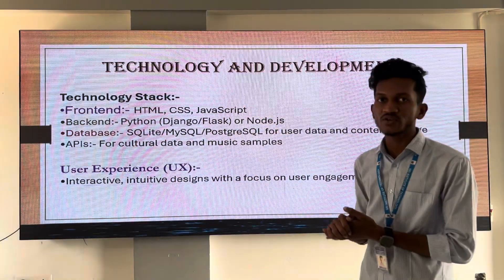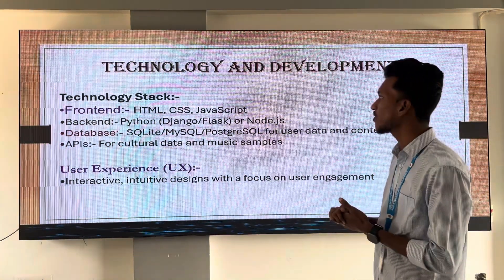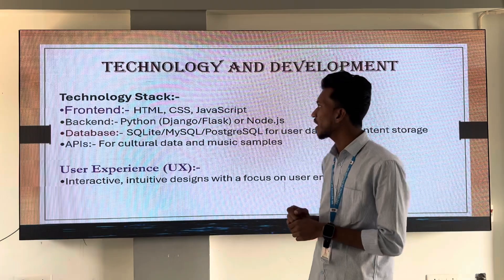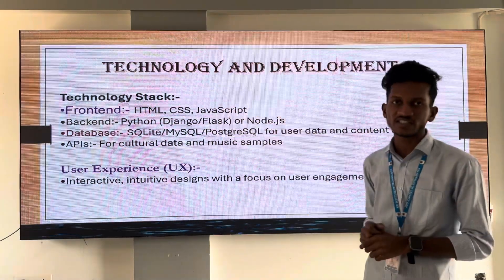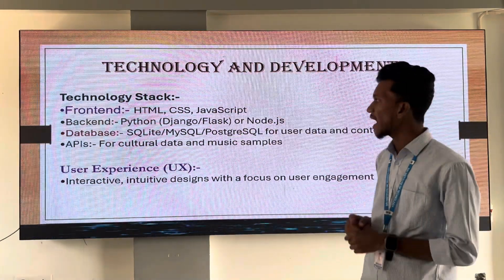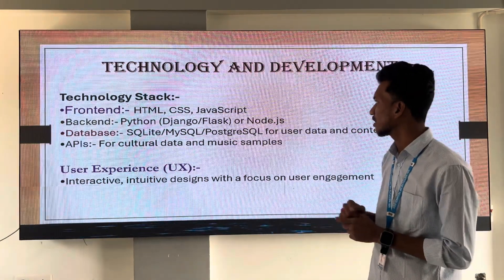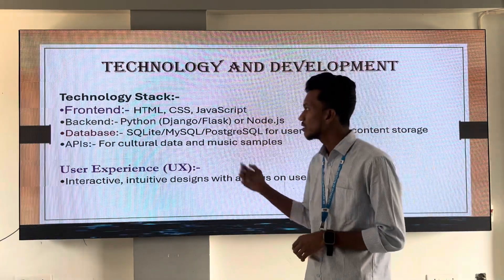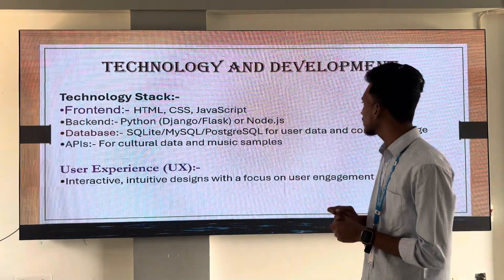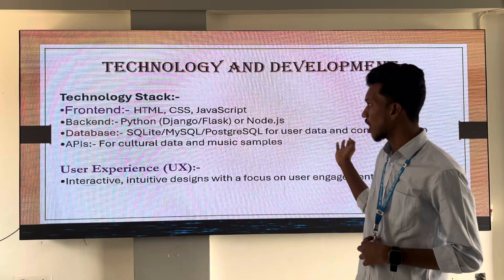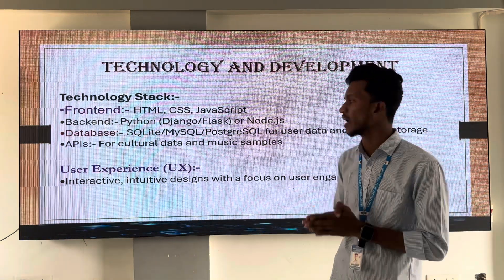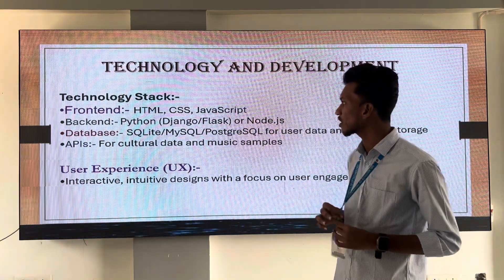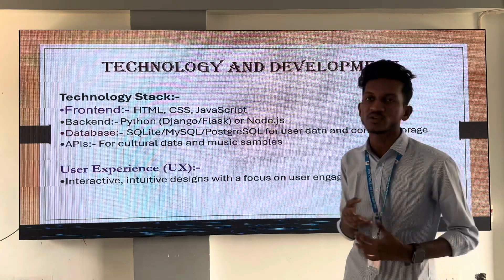Now, what technologies are we using to develop our website? For the frontend, we are using HTML, CSS, and JavaScript. For the backend, we are using Python frameworks like Django, Flask, or Node.js. We are also using MongoDB as our database, and APIs for cultural data and musical samples.